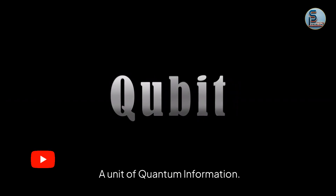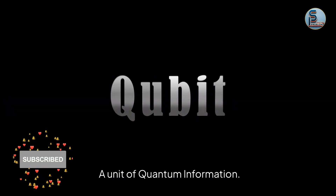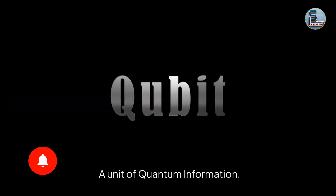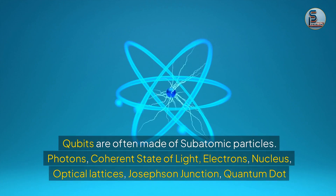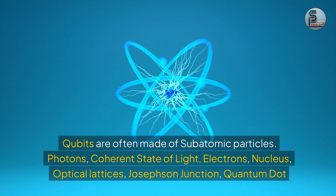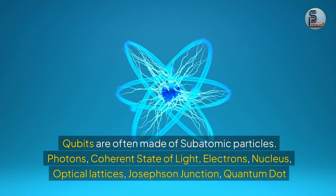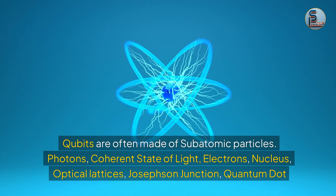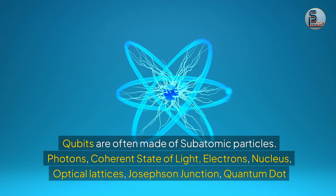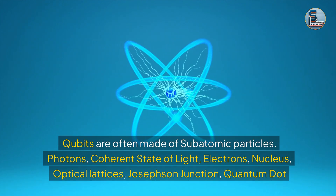A qubit is a unit of quantum information. Qubits are often made of subatomic particles — photons, coherent state of light, electrons, nucleus, optical lattices, Josephson junctions, and quantum dots.